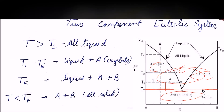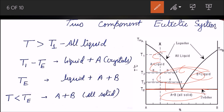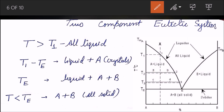At temperatures greater than T1, there is all liquid. From T1 down to point E, liquid plus crystal is present. At E, the eutectic point, all three phases coexist: liquid, crystals of A, and B-plus-liquid. B will start precipitating at this point. This gives you an overview of the diagram.